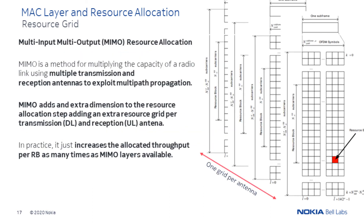Multi-input multi-output, or MIMO, is a method used for increasing the capacity of a radio link using multiple transmission and reception antennas to exploit multipath propagation. Theoretically, MIMO adds an extra dimension to the resource allocation step, adding an extra resource grid per transmission direction — uplink and downlink. In practice, it just increases the allocated throughput capacity per resource block by as many times as MIMO layers available.